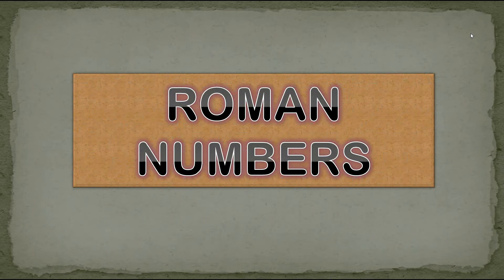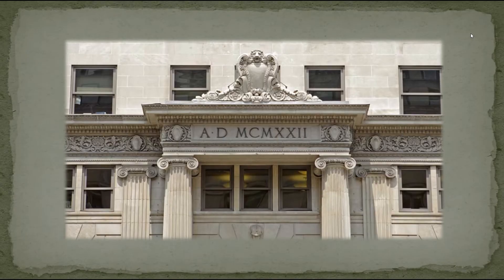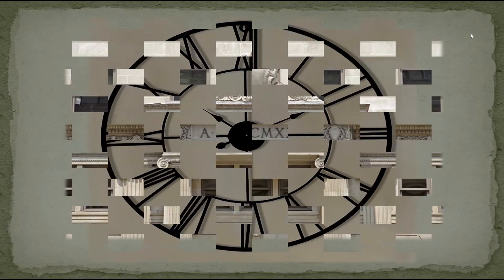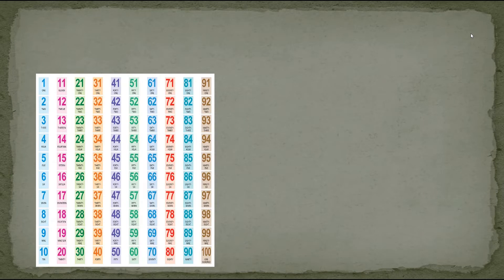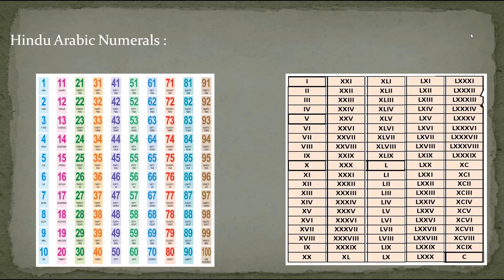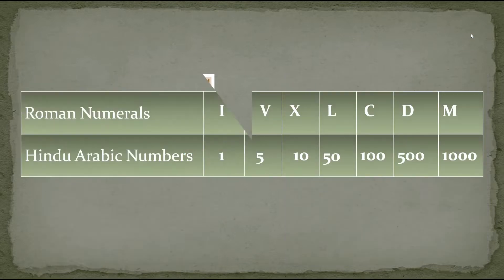The ancient Romans used letters to write numbers. We also use Roman numerals in some clocks. These are the Hindu-Arabic numbers which we use in our daily life, and these are the Roman numerals. Now let's understand the values of the letters used in Roman numerals in terms of Hindu-Arabic numbers.